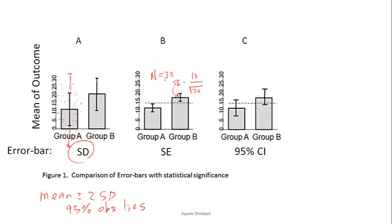The smaller the bar, the more accurate the mean estimation. The 95% confidence interval is actually mean plus or minus 2 times the standard error. So if the standard error is 10 over the square root of 30, then this length is 2 times 10 over the square root of 30. That's how you compute the 95% confidence interval.